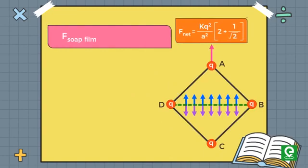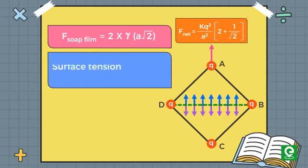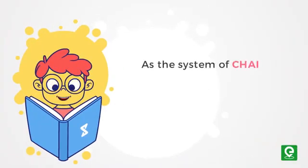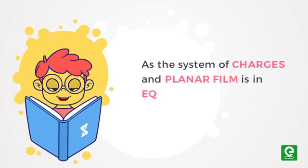which is equal to 2 times gamma times a root 2. Please note that here we have multiplied by 2 because surface tension force is acting from both sides of the soap film. Also note that surface tension equals force per unit length. As the system of charges and the planar film is in equilibrium,